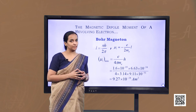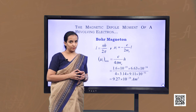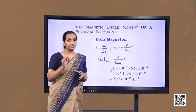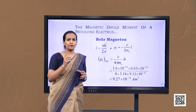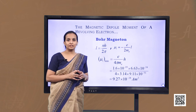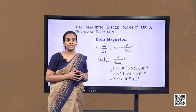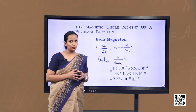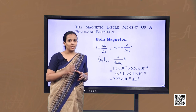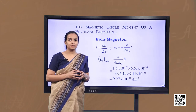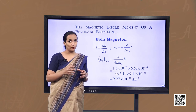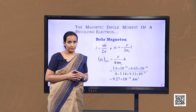Besides the orbital magnetic moment, the electron has an intrinsic magnetic moment with the same value as μl minimum, called the spin magnetic moment. Note that this is not because the electron is spinning; nevertheless it possesses this intrinsic magnetic moment. The microscopic roots of magnetism in iron and other materials can be traced back to this intrinsic spin magnetic moment.